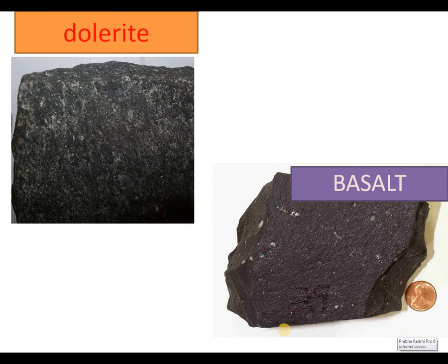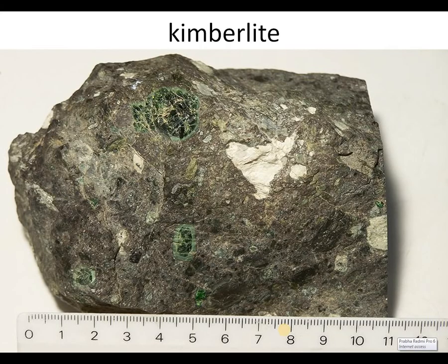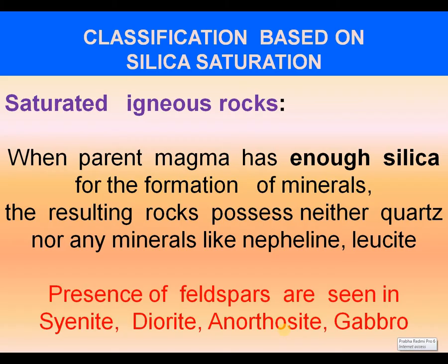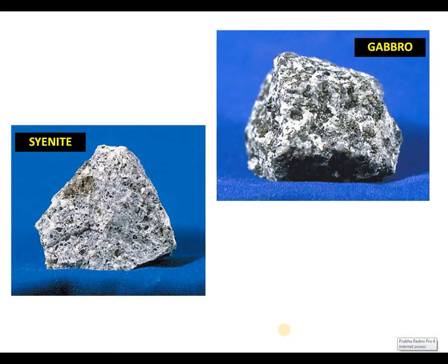Similarly, syenite and basalt can be seen in the picture. Kimberlite is a famous igneous rock where we can find the occurrence of diamonds. Saturated Igneous Rocks: when parent magma has enough silica for formation of minerals, the resulting rocks possess neither quartz nor minerals like nepheline or leucite. Feldspars are seen especially in syenite, anorthosite, diorite, and gabbro rocks.